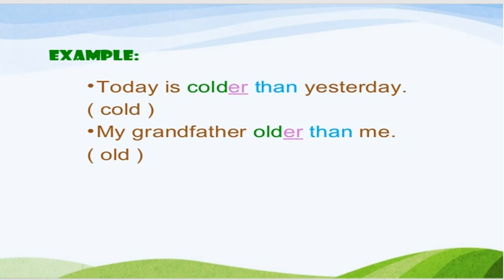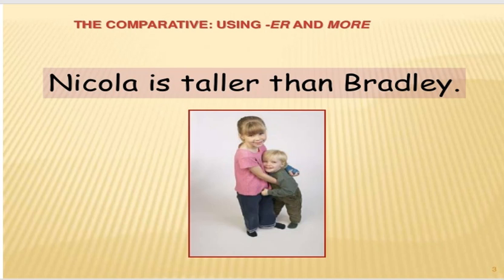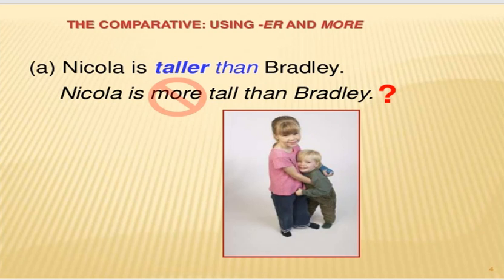Let's look at examples. Today is colder than yesterday. Bugün dünənkindən daha soyuqdur. Burada ikisi müqayisə edir — bu günü dünənlə müqayisə edir. Ona görə biz sifəti müqayisə dərəcəsində götürürük və than-dan istifadə edirik. My grandfather is older than me. Babam məndən yaşlıdır. Nikola is taller than Bradley.